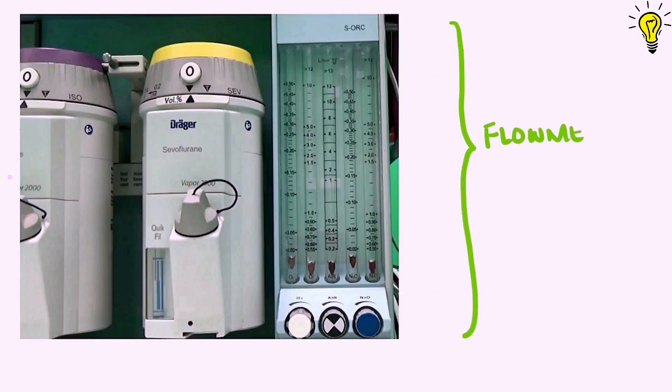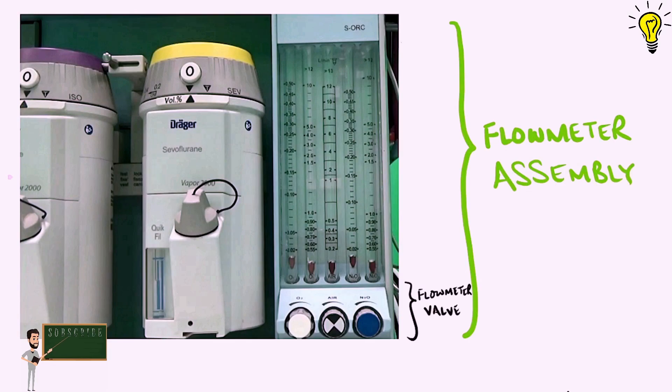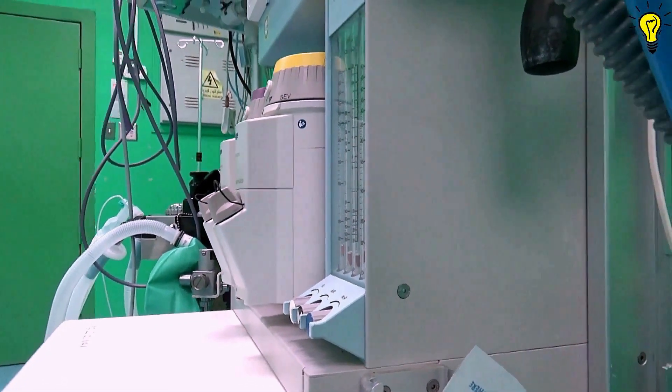The flow meter assembly has two components. The first component is invisible, the flow meter valve. And the second component is the flow meter or rotometer. So let's see the flow meter valve first.